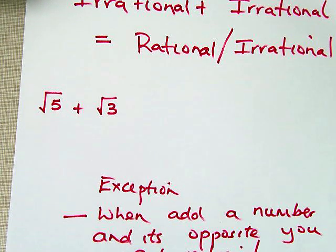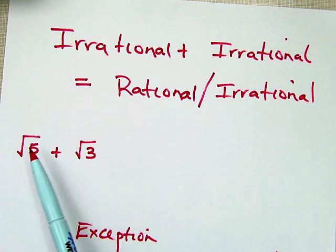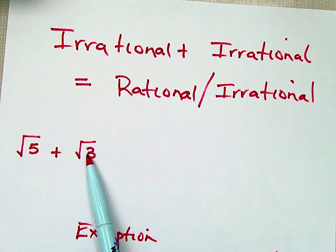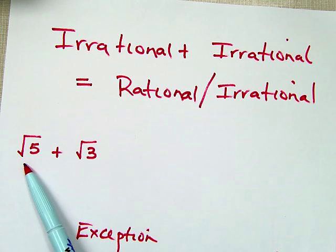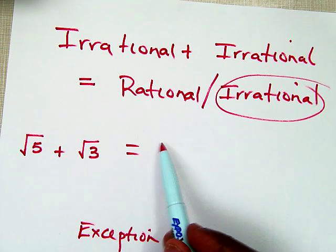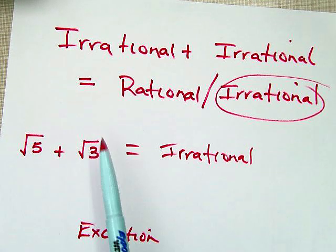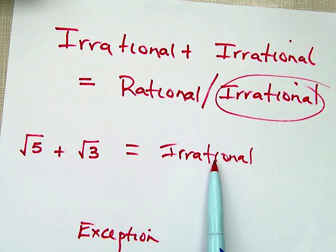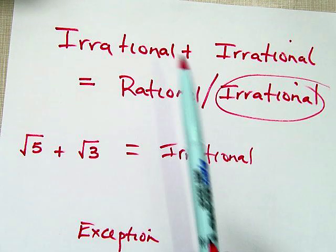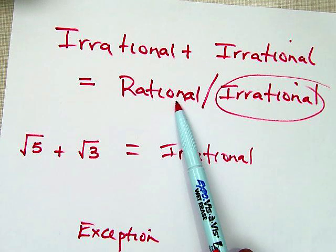What if I add two irrational numbers? For example, square root of 5 plus square root of 3 — you're going to get an irrational number. You can check those on your calculator. So irrational plus irrational most times gives you irrational. However, there are a few times when you will get a rational number.